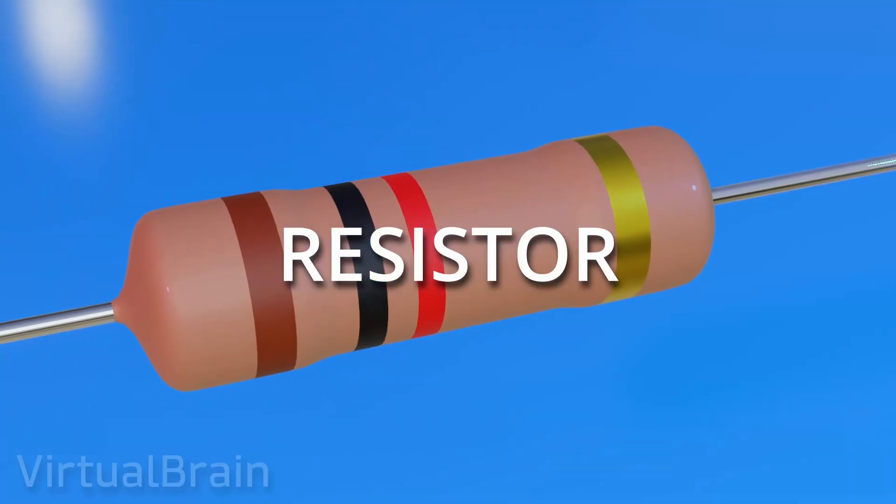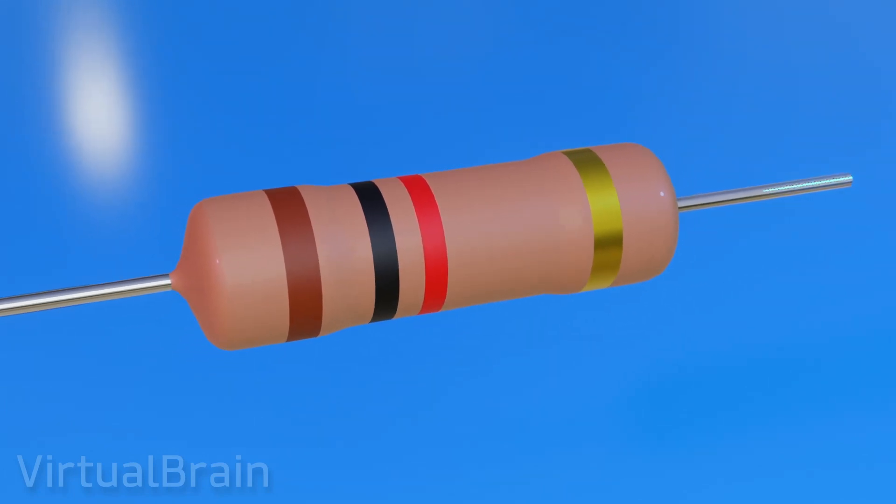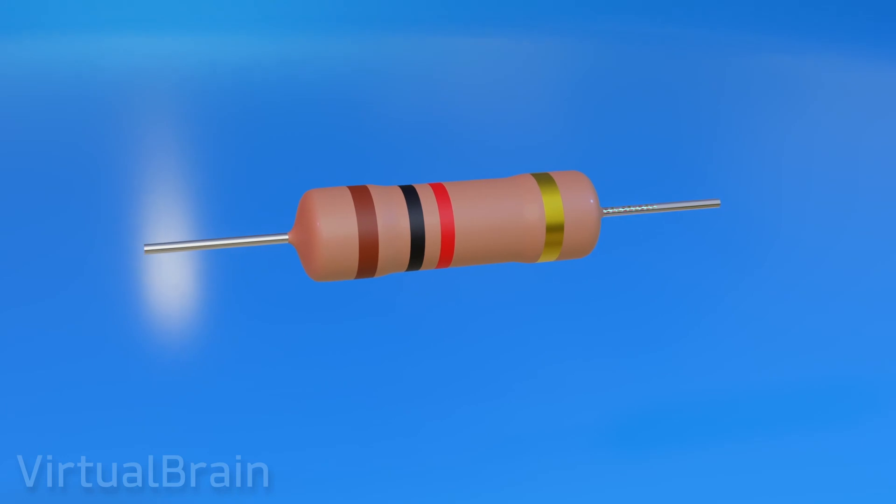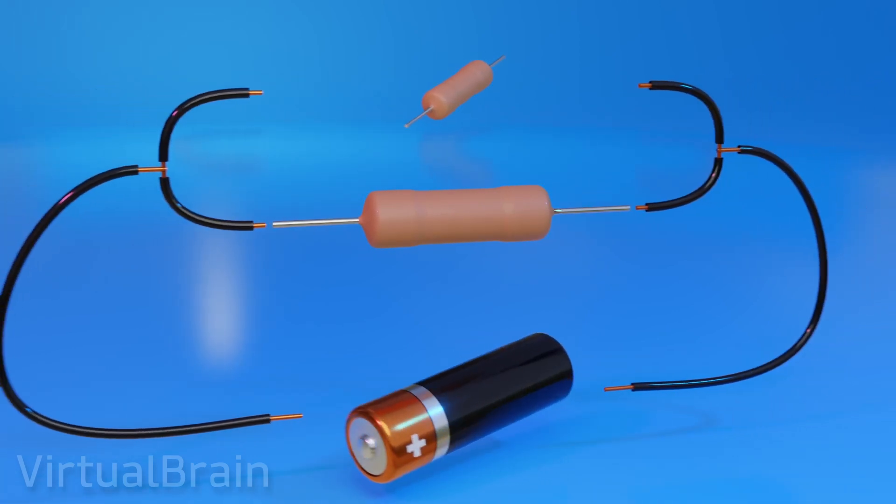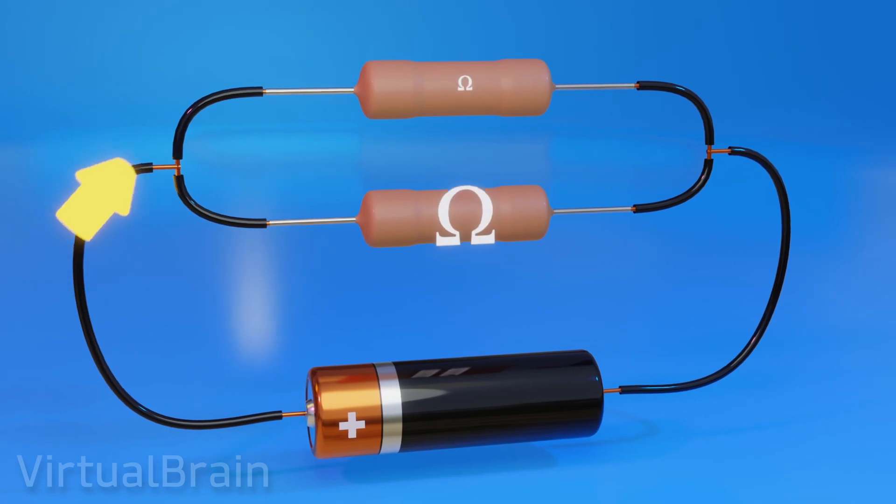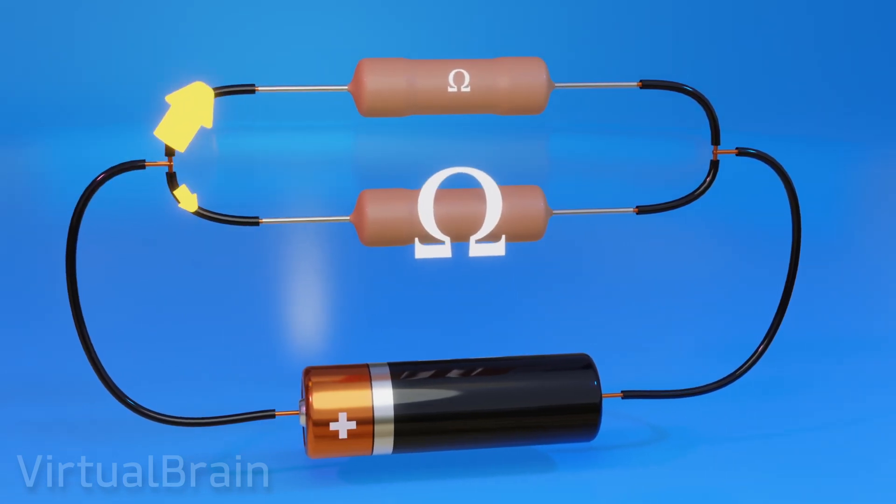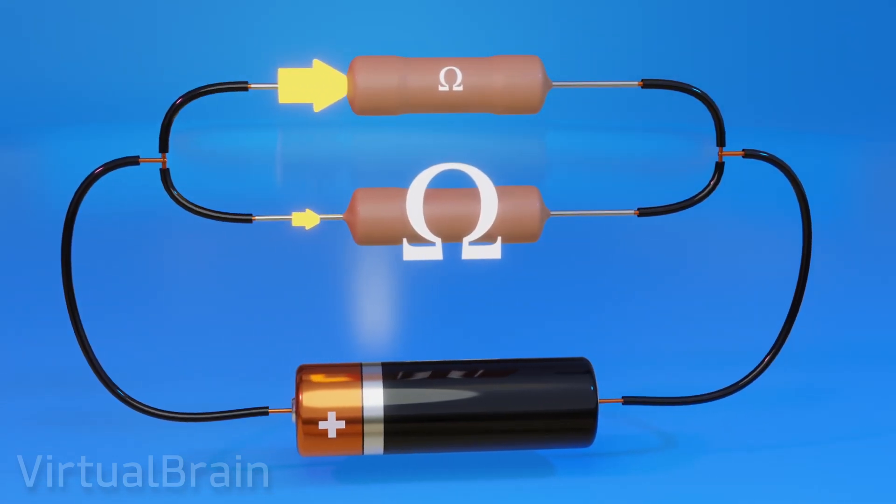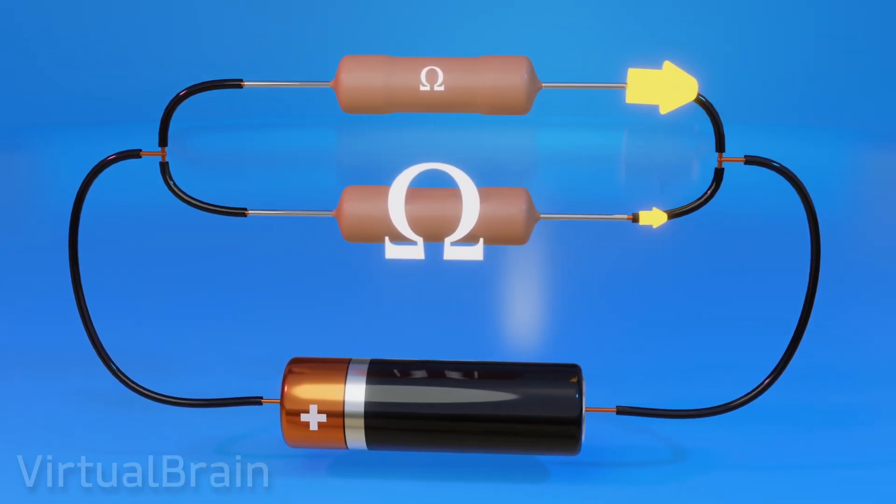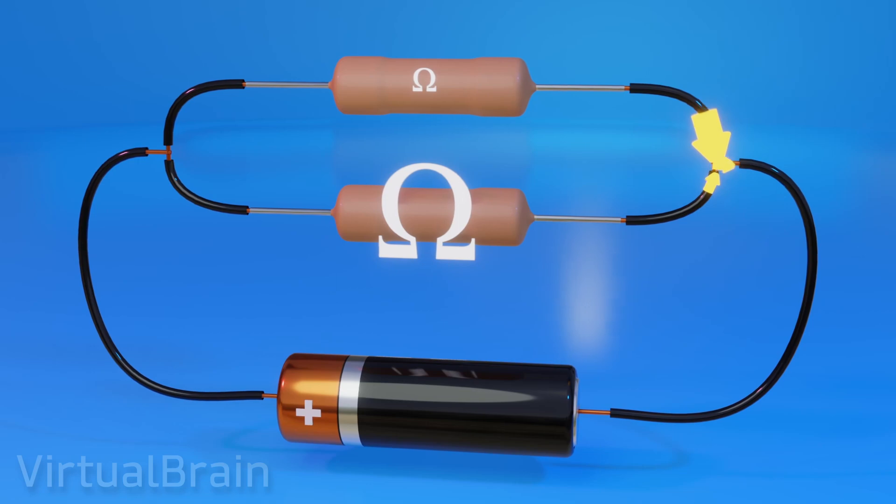First we have the resistor. This is an electronic component designed to introduce an electrical resistance or opposition to the passage of current, a quality that is used among other things to guide the current through a circuit. In practical terms, when there are two paths through which the current can pass, and one of them has a high electrical resistance, most of the current will go through the opposite path, because the energy tends to seek the path that presents less opposition to its passage.